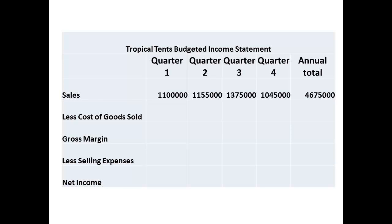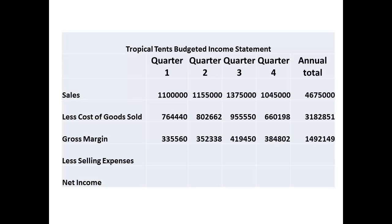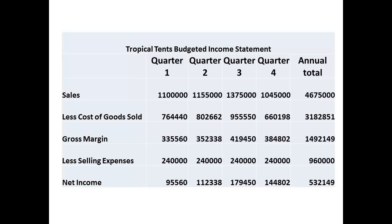The budget income statement can now be constructed. We start by entering the revenue from sales. The cost of goods sold is now determined by multiplying the unit cost per tent by the sales for each quarter. Subtracting cost of goods sold from sales revenue gives the figures for gross margin for each quarter. Selling and other expenses are subtracted from the gross margin. This gives us the net income for each quarter and the total net income for the year.